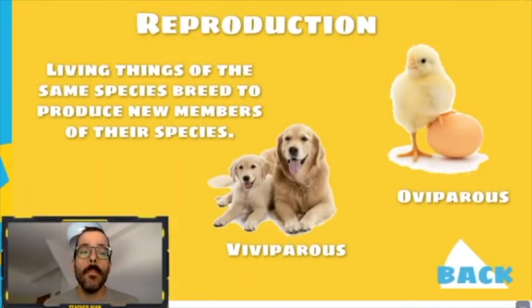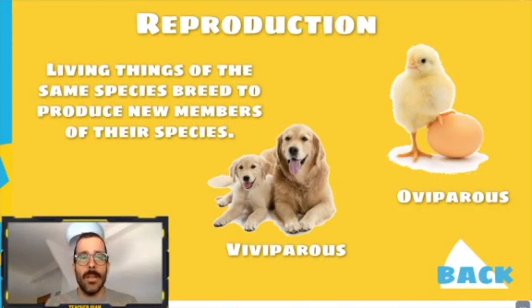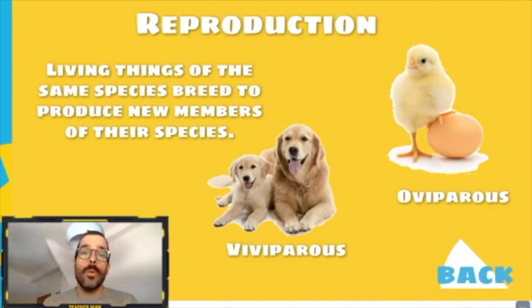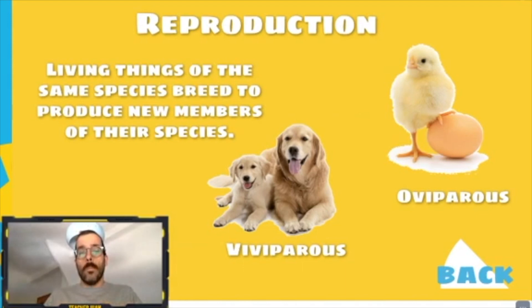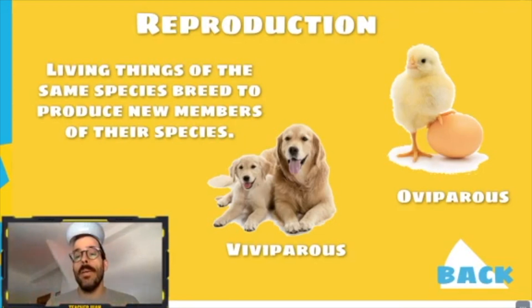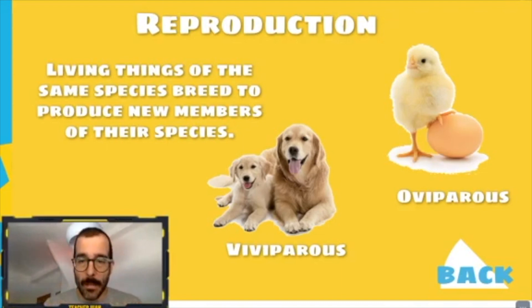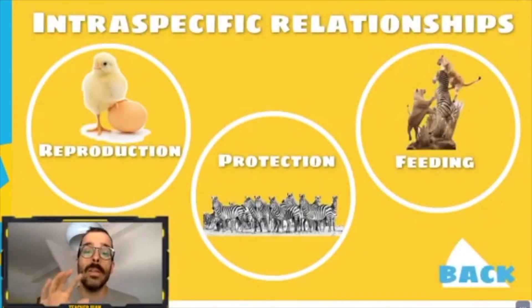As you know, this is typical reproduction — we studied it in unit one. Depending on how reproduction is produced, we can be viviparous if the baby is born from the womb of the mother, or oviparous if the baby comes out from an egg. So reproduction is the first intraspecific relationship.